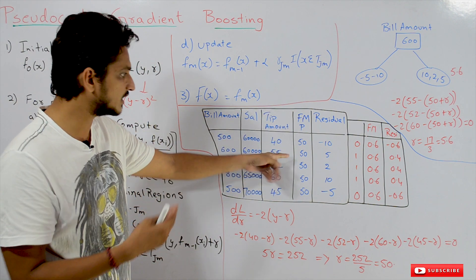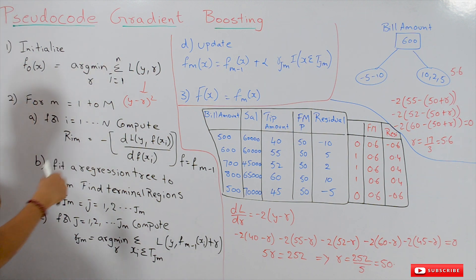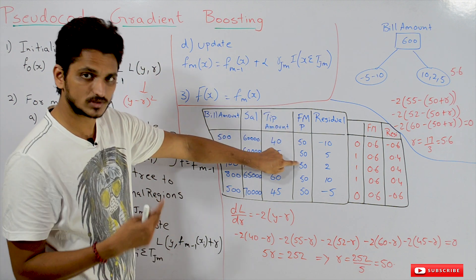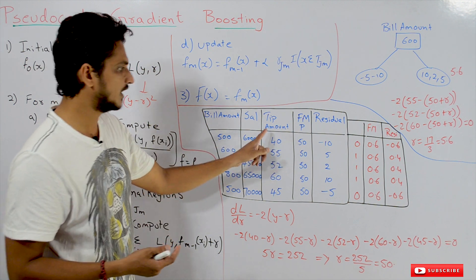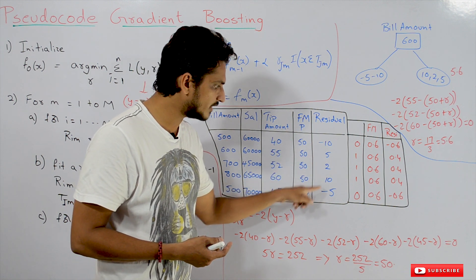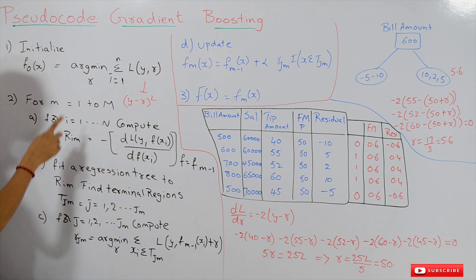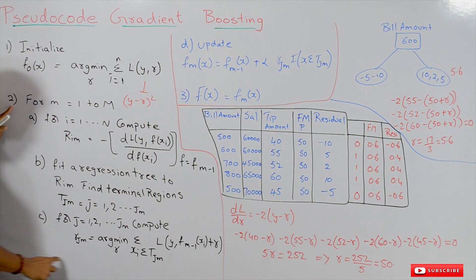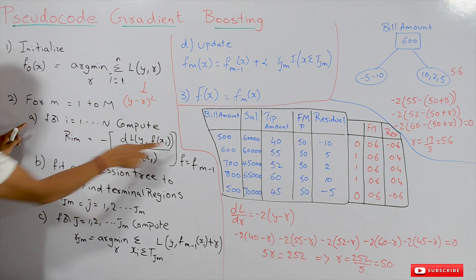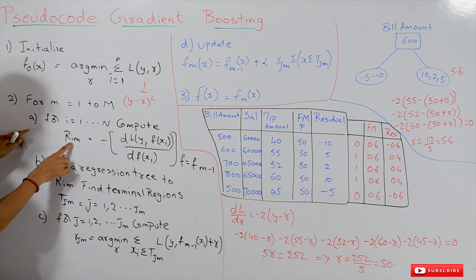That completes the initialization step. In the second step, for m = 1 to M models, we calculate the residual values. In our example: 40 − 50 = −10, 55 − 50 = 5, and so on. For i = 1 to n data points, we calculate the residual r_im for the i-th data point in the m-th model.